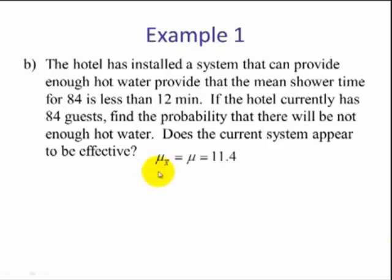The center of this distribution, the mean, is equal to the population mean, which is 11.4. The standard deviation is equal to sigma divided by square root of n, or 2.6 divided by square root of 84. It's gotten smaller. We call this the standard error.